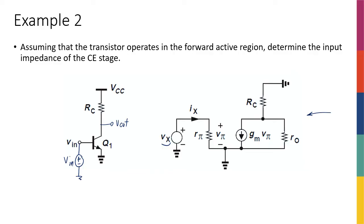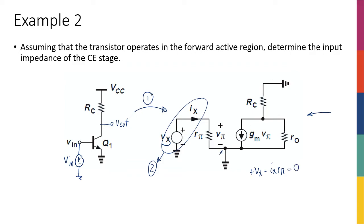Step one is to draw the small signal circuit. Step two is adding VX and IX. Step three is finding the relationship between VX and IX. If I write a KVL here: plus VX minus IX times Rπ equals zero, because the emitter is at ground. Therefore, Rπ is equal to VX divided by IX, and I'm done.